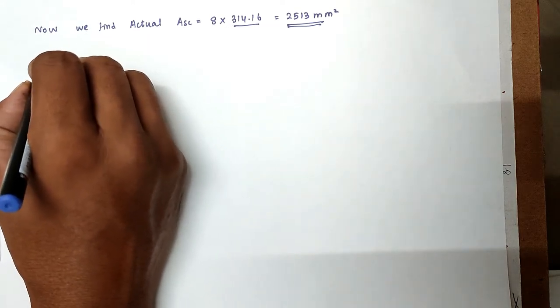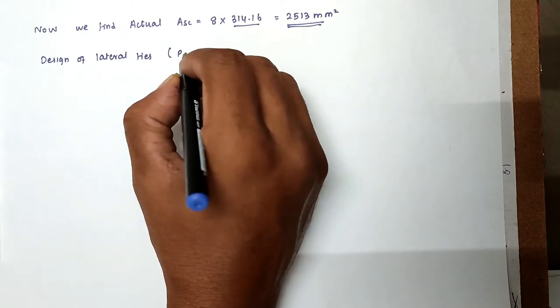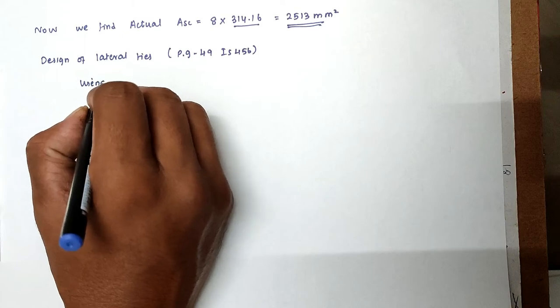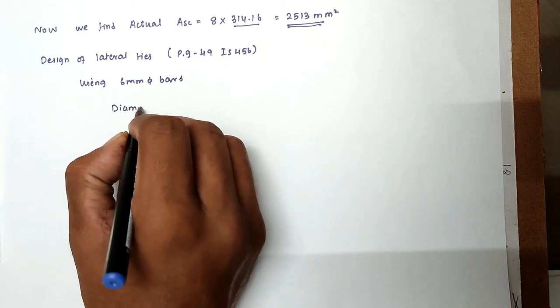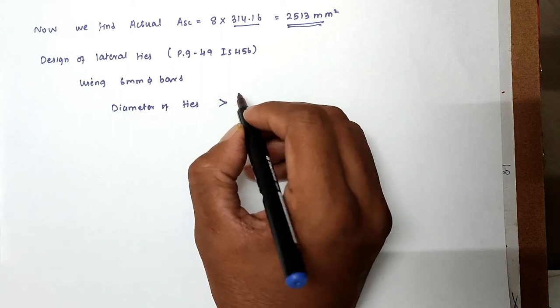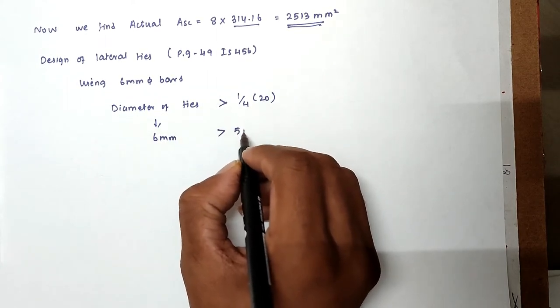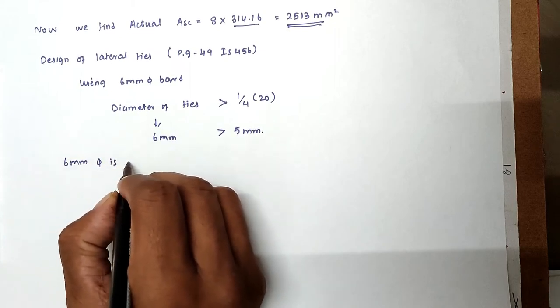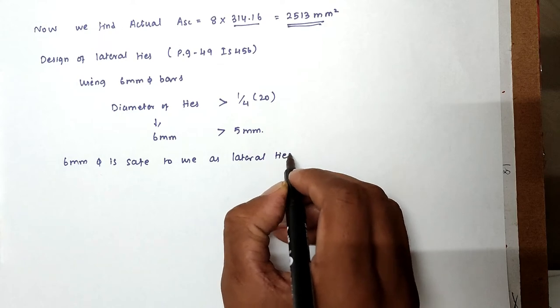Now we can design the lateral ties. So in page number 49 in IS 456, using 6mm diameter bars. So diameter of ties is greater than one by four into 20, so that is 6mm greater than 5mm. Hence 6mm diameter is safe to use as lateral ties.